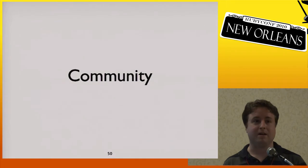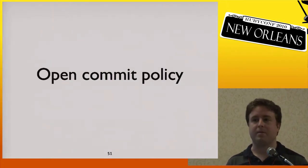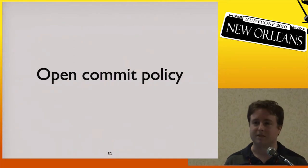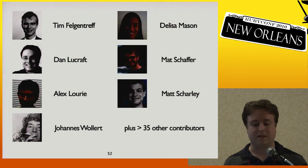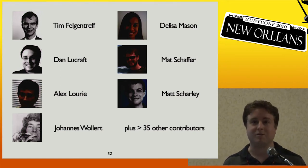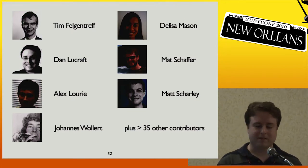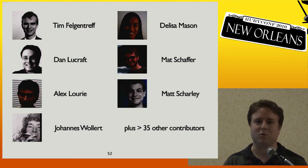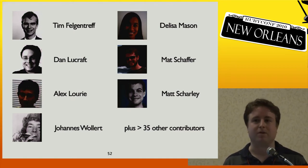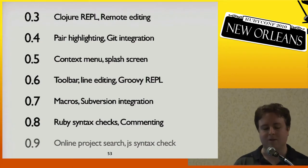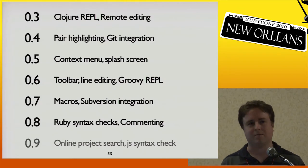I'd like to talk about the community around Redcar. We have an open commit policy: if you get a patch acceptable to master, you're put on the Redcar team on GitHub and can commit to master straight away — something the Rubinius and Padre projects did with great success. We now have seven regular contributors. Of these seven, Delisa, Alex, and Charlie — this is their first Ruby project they've contributed to, which I hope means Redcar is bringing more people into Ruby. We have more than 35 other contributors, and there's been a lot of progress over the last three or four months.